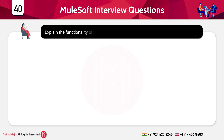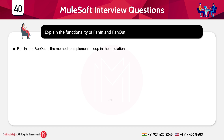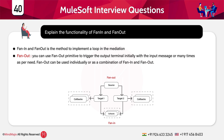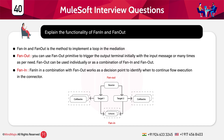Explain the functionality of fan-in and fan-out. Fan-in and fan-out is the method to implement a loop in mediation. Fan-out can be used to trigger the output terminal initially with the input message or multiple times as needed. Fan-out can be used individually or in combination with fan-in. Fan-in works as a decision point to identify when to continue the flow execution in the connector. It accepts multiple messages until the decision point is made. The last message received in the flow is represented as an output terminal.